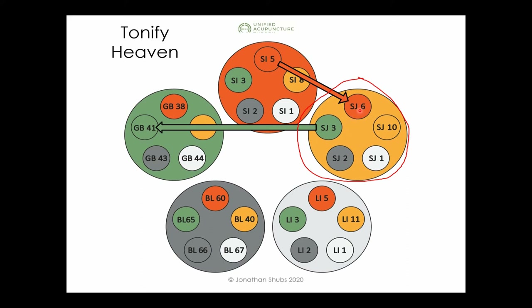To tonify heaven, we use the same approach as before. Heaven and earth are supported by fire. We tonify San Jiao 6, the fire point of heaven, which relates to Small Intestine 5 — tonify both on the left side. Then we reduce wood's impact on the heaven channel by dispersing San Jiao 3 and Gallbladder 41 on the right side.